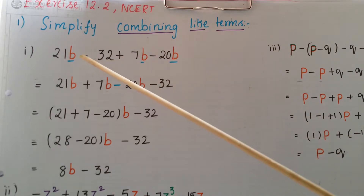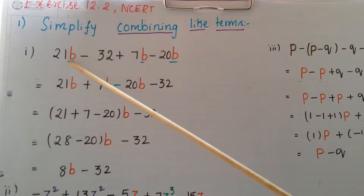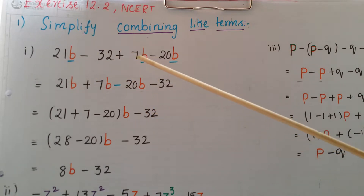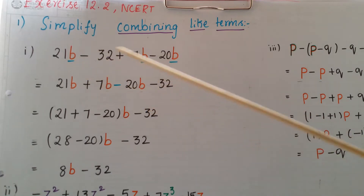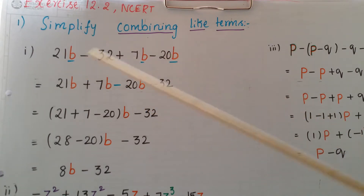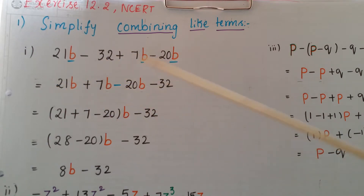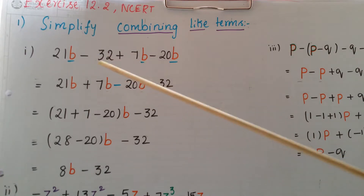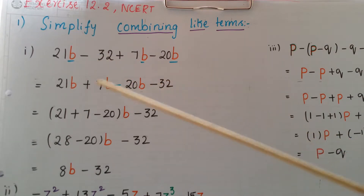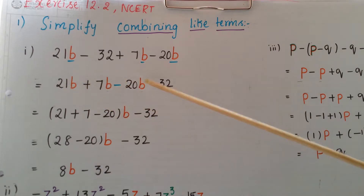First, identify the like terms. Like terms means same literal factors — here b is the literal factor. Check for same like terms: 7b, 20b — underline all like terms. Write all the like terms at one place: 21b plus 7b minus 20b, then write the constant minus 32.